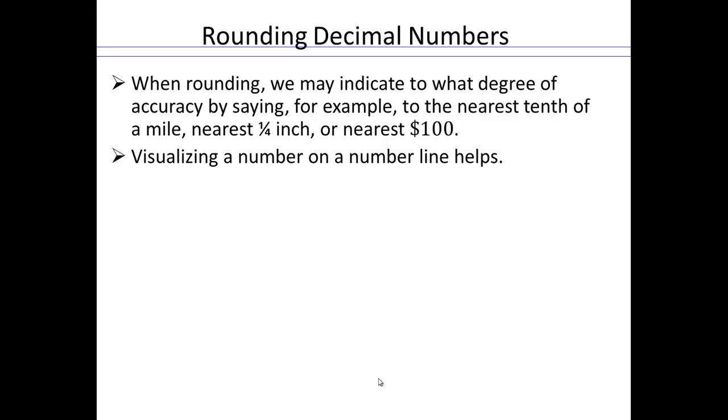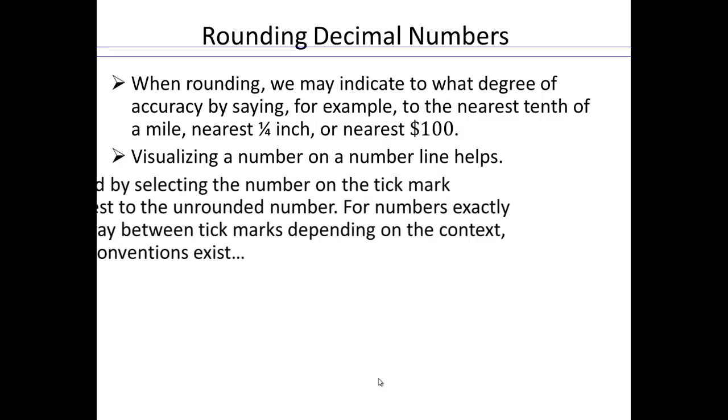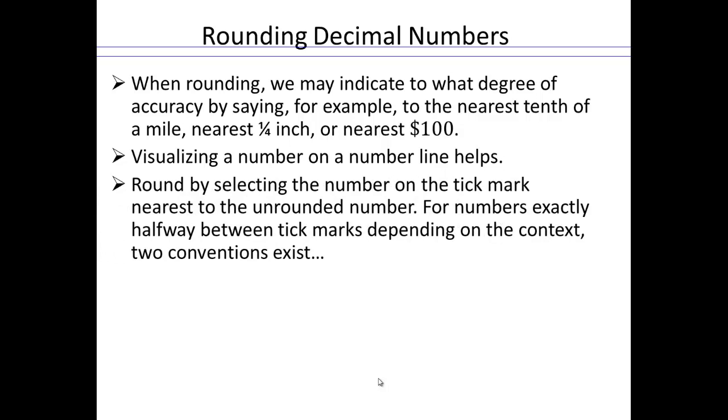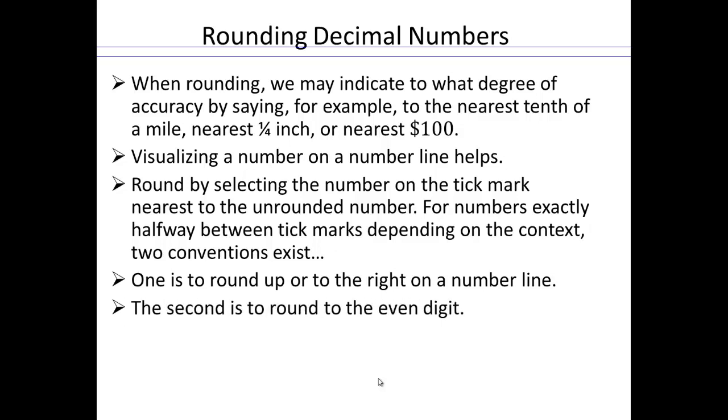Visualizing a number on a number line helps in rounding a decimal. You can select the number on the tick mark nearest to the unrounded number. For the number exactly halfway between tick marks, depending on the context, you can use two different conventions. One is to round up to the right of the number line, or one is to round to the nearest even digit.